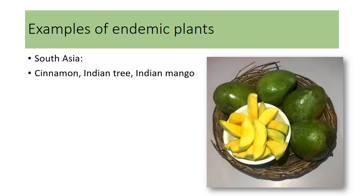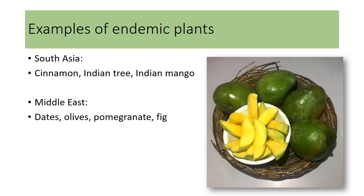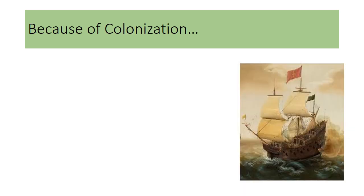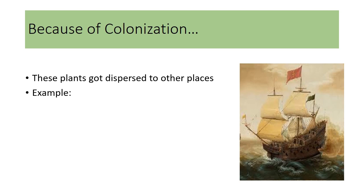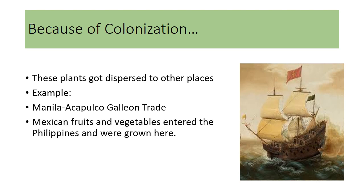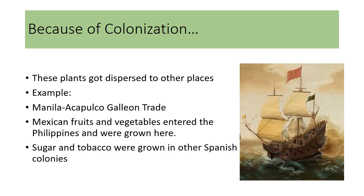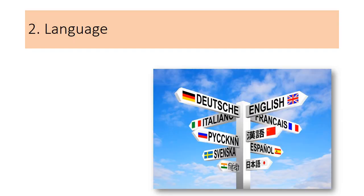You have the cinnamon, the Indian tree, the Indian mango, while in the Middle East, you have the dates, olives, pomegranate, and fig. But because of colonization, these plants got dispersed to other places. The Manila-Acapulco galleon trade back in the 15th and 16th century was very much instrumental to the dispersion of these plants. Mexican fruits and vegetables entered the Philippines and were grown here, while sugar and tobacco were grown under Spanish colonies.